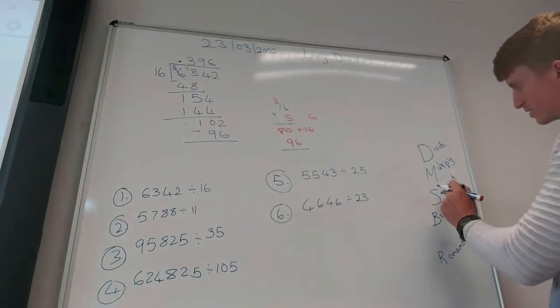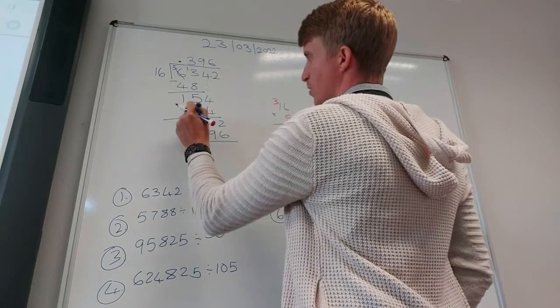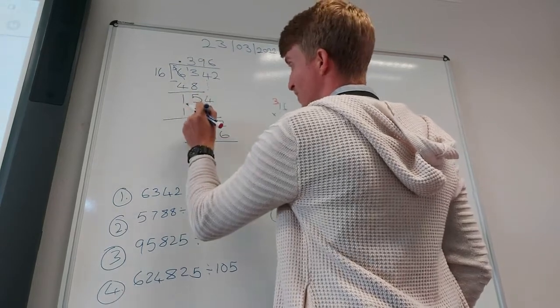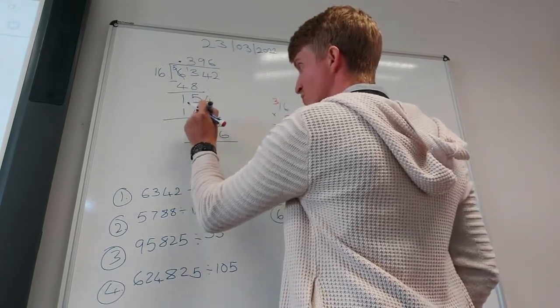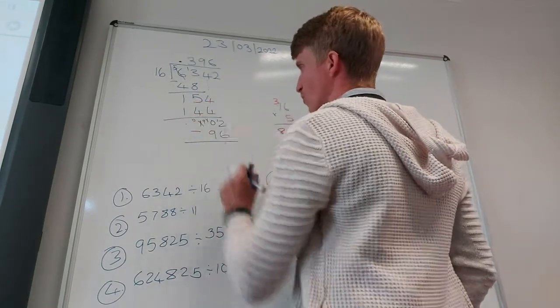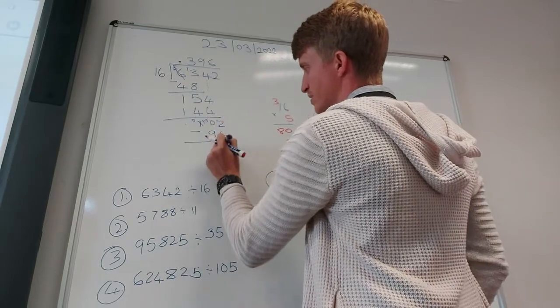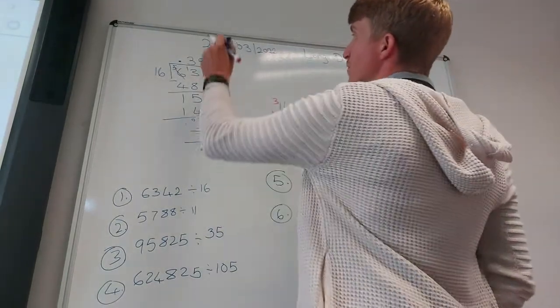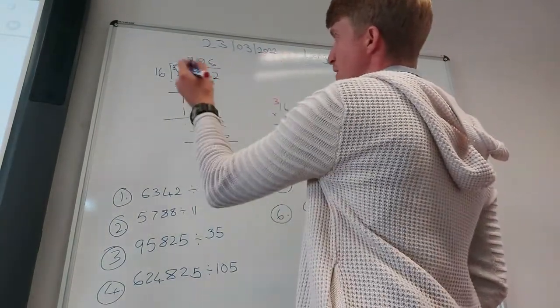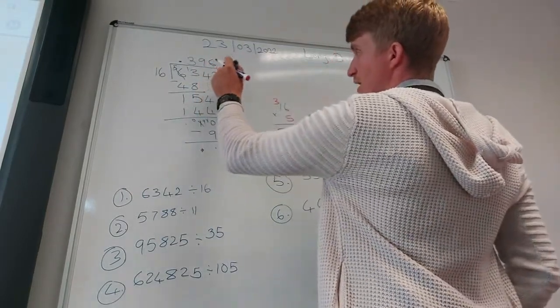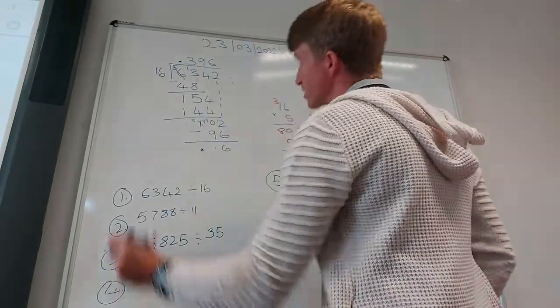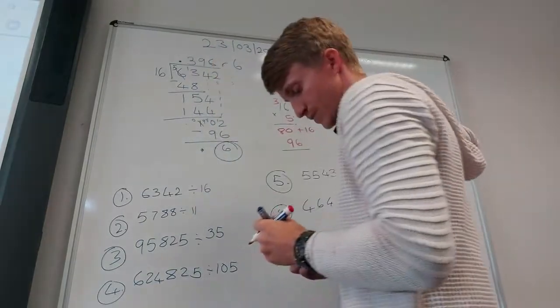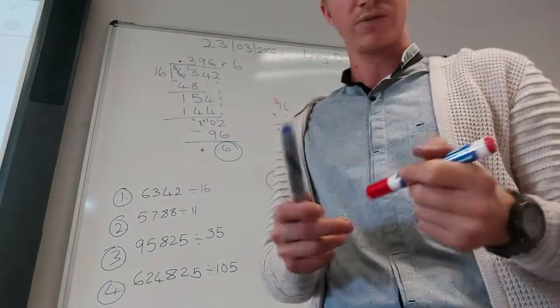Then my next step is subtract. So I can't do that. I borrow one from there. So that becomes a 1, but I'm borrowing there, so that becomes a 9. Then borrow 1 over to there. That is 12 minus 6 equals 6. 9 minus 9 equals 0. Then what's my next step? My next step is bring down. There's nothing to bring down, so my last step is remainder. Remainder what? The number there, 6. That is long division with a double divisor.